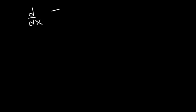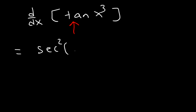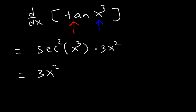Find the derivative of tangent x cubed. First, let's differentiate tangent. The derivative of tangent is secant squared, and the inside function has to remain the same. Next, differentiate the inside function, x cubed — so that's 3x squared. And it's always multiplication, so it's going to be 3x squared secant squared x cubed.